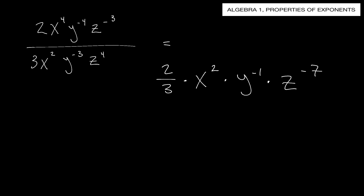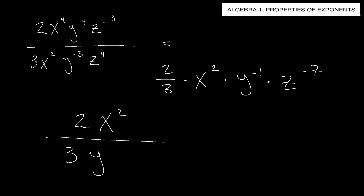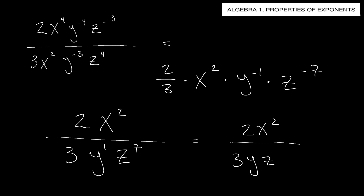Now let's put things where they belong. Up top goes the 2 and x squared. Down below goes the 3. Y to the negative first power brings y underneath, making the exponent positive - y to the first. Similarly, z to the negative seventh moves underneath as z to the seventh. Our final answer is 2x squared over 3y z to the seventh power.